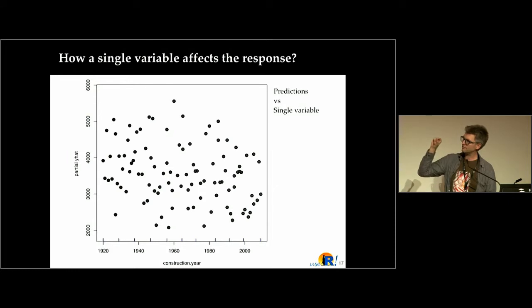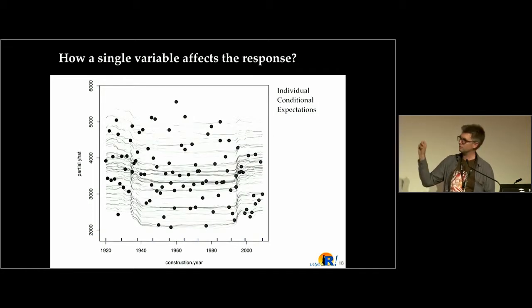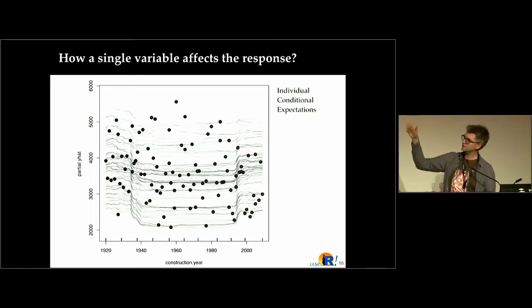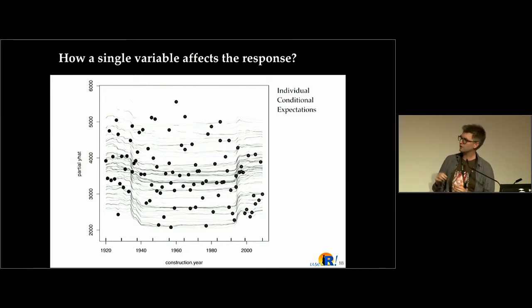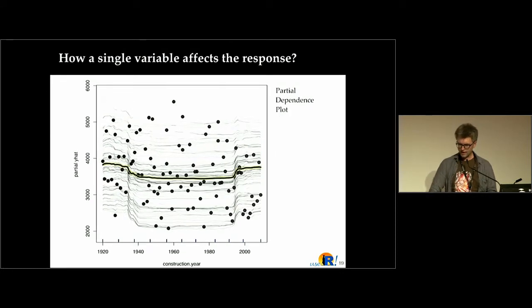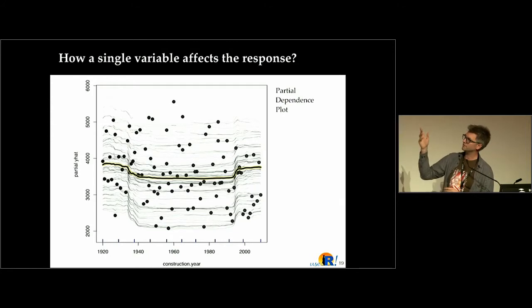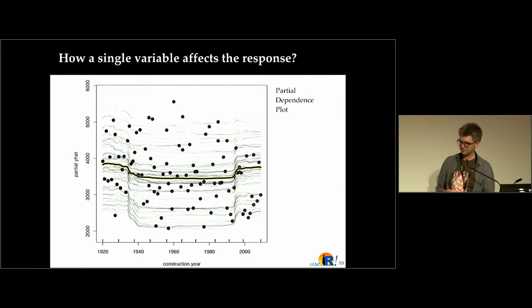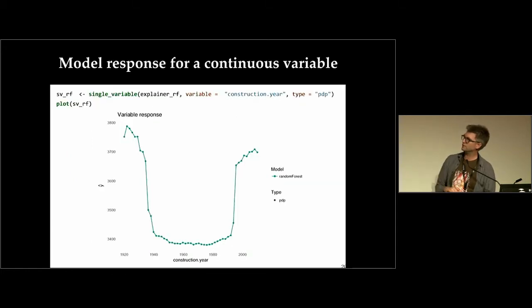Imagine you have apartments: on the X axis is construction year, on the Y axis are predictions for these apartments. You create what-if scenarios for every apartment — what would happen if the construction year were smaller or larger. These plots are called individual conditional expectations; they show what would happen if a single apartment had a different value. You can then average all these curves, and the average is called partial dependency plots, showing on average how the model responds for a given variable. This is easily done with DALEX in a single instruction.